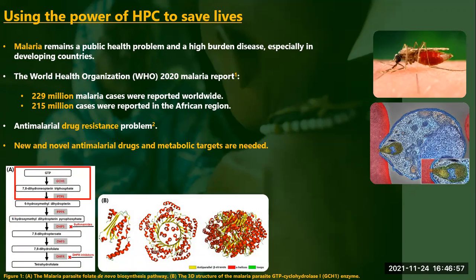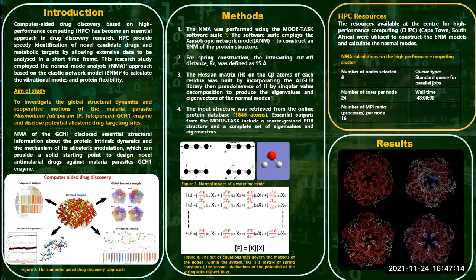More specifically, the first and initiating enzyme of this pathway is the GTP-cyclohydrolase. To your right, you see the 3D structure of the enzyme, which is a homodecamer composed by the association of two pentameric identical units.